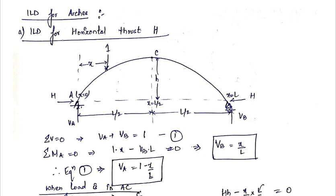In the previous lecture, we studied about influence line diagrams, what they are, their different uses, and how to draw the ILDs for the support reactions. Now, in this lecture, we will study how to draw the ILDs for the horizontal thrust for a three-hinged arch.